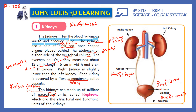The kidneys are a pair of dark red, bean-shaped organs. Dark red is underlined — that is what they are called — dark red, bean-shaped.